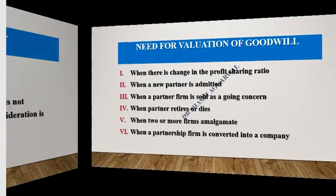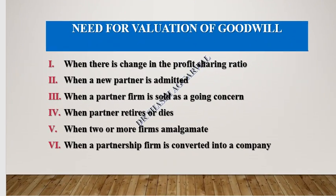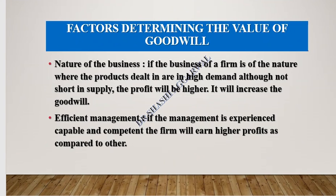We show goodwill in books of accounts only when it is paid for, according to Accounting Standard 26. Goodwill is not recognized in the books of account unless consideration is paid for it. Goodwill is valued when there is a change in the profit-sharing ratio, admission of a new partner, sale of a partnership firm as a going concern, retirement or death of a partner, or when two or more firms amalgamate, or when a partnership firm is converted into a company.